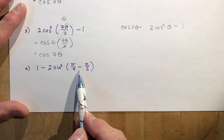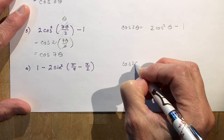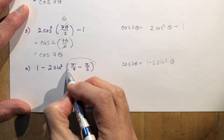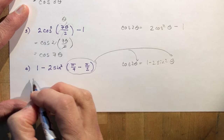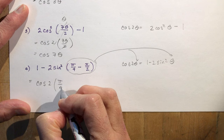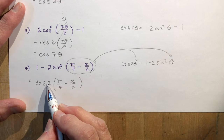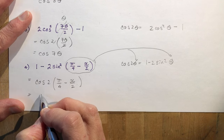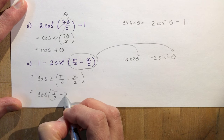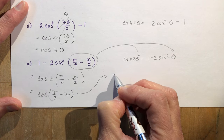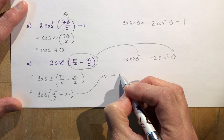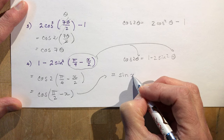This one's a little trickier: 1 minus 2 sine squared (π/4 - x/2). That's cos 2θ with θ = π/4 - x/2. So this equals cos of 2(π/4 - x/2) = cos(π/2 - x). And π/2 minus x is one of your co-function identities — cos(π/2 - x) = sine x. So the answer is just sin x.